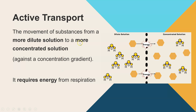Active transport is the movement of substances from a dilute solution to a more concentrated solution — in other words, it's going against the concentration gradient.